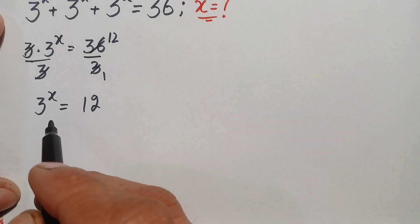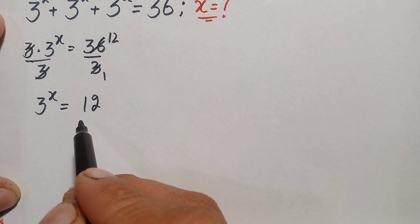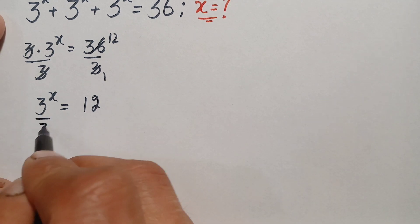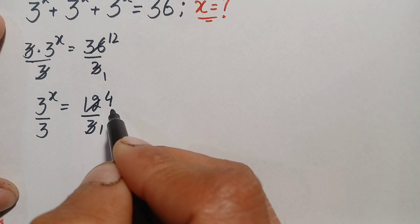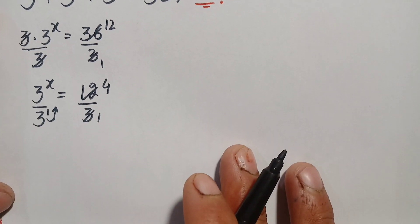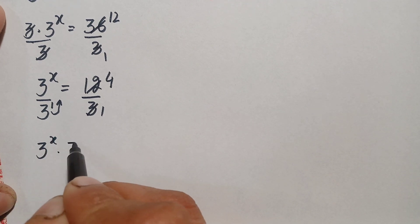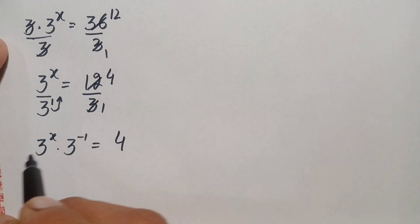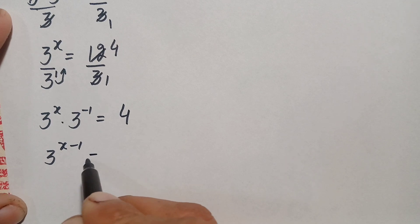We can solve this equation further with two approaches: one is to take common log on both sides, and the second approach notes that 3 and 12 are both divisible by 3. So we divide both sides by 3 again, giving 3 to the power x divided by 3 equals 4. Moving 3 to the power 1 to the numerator changes its sign, so we get 3 to the power x times 3 to the power negative 1 equals 4. Since the base is the same on the left, we add the powers: 3 to the power x minus 1 is equal to 4.